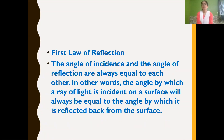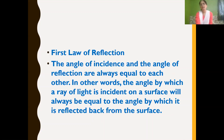This is known as the first law of reflection. The angle of incidence and the angle of reflection are always equal. Or we can say the angle by which the ray of light is incident on a surface will always be equal to the angle by which it is reflected back from the surface. Any one definition you can learn.